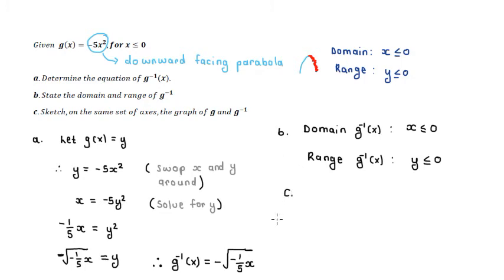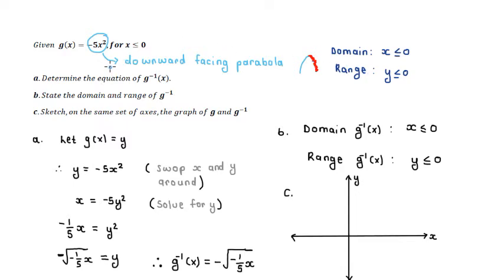Moving to question C: sketch, on the same set of axes, the graph of G and G to the minus one. To sketch the graph of G, we look at its domain and range and the properties of the parabola. This is a downward facing parabola because we have a negative A value, and the A value is greater than one, which means the parabola is going to be quite skinny and close to the negative X axis. The domain is X values less than or equal to zero, with the first point at zero, and the range is Y values less than or equal to zero.